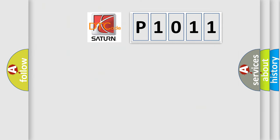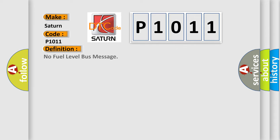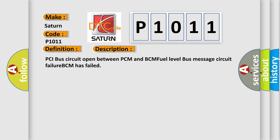So, what does the diagnostic trouble code P1011 interpret specifically for Saturn car manufacturers? The basic definition is No fuel level bus message. And now this is a short description of this DTC code: PCI bus circuit open between PCM and BCM, fuel level bus message circuit failure, BCM has failed.